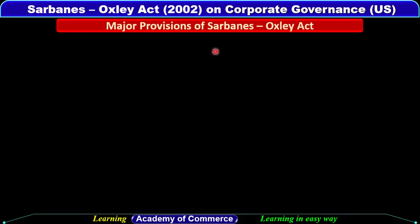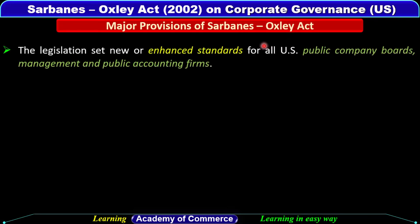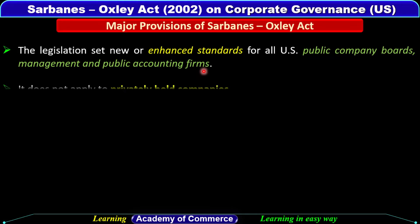Let's understand what the major provisions of the Sarbanes-Oxley Act are. The legislation set new or enhanced standards for all US public company boards, management, and public accounting firms. Sarbanes-Oxley Act ne new or enhanced standards set up kiye US public company boards, management, aur public accounting firms ke liye. It does not apply to privately held companies.